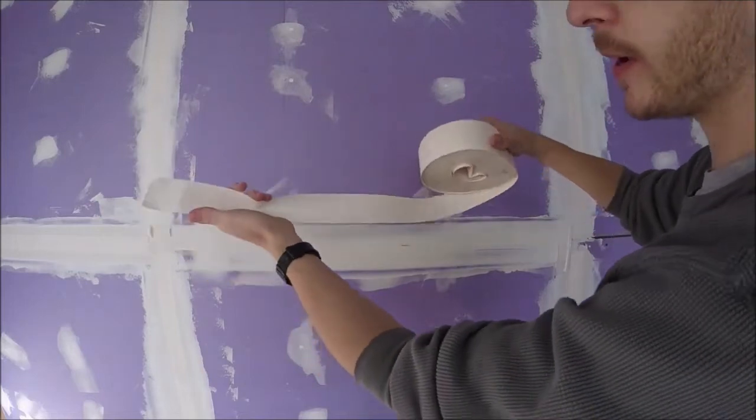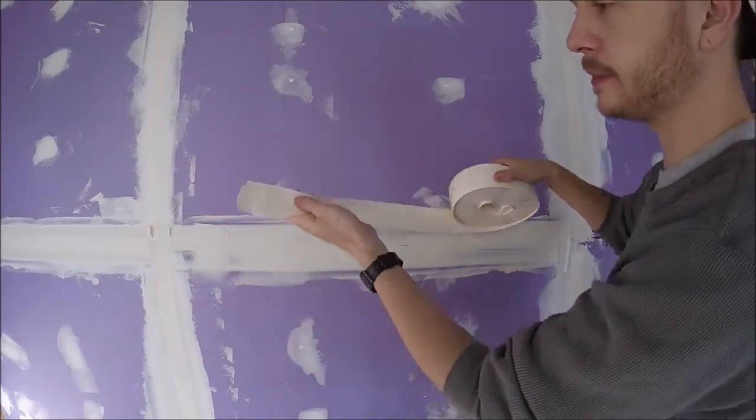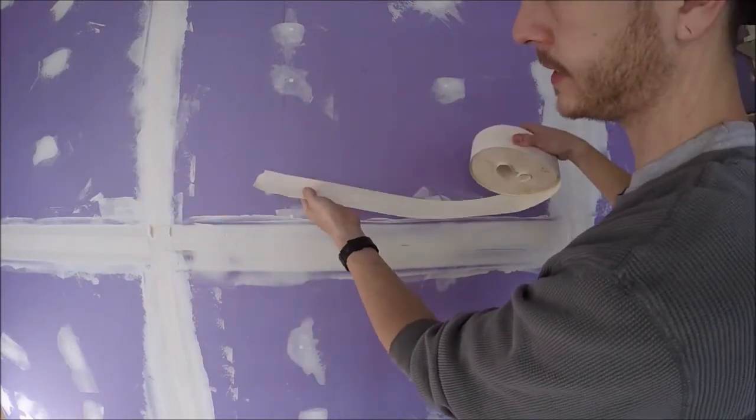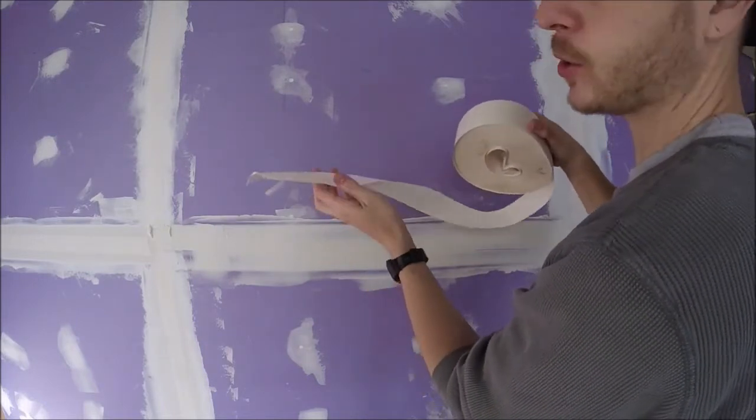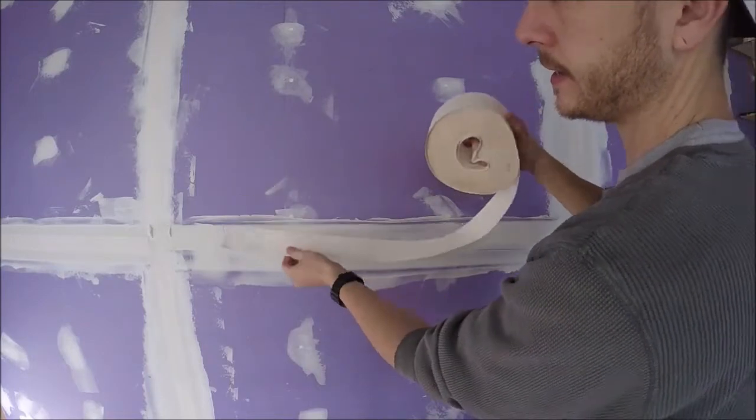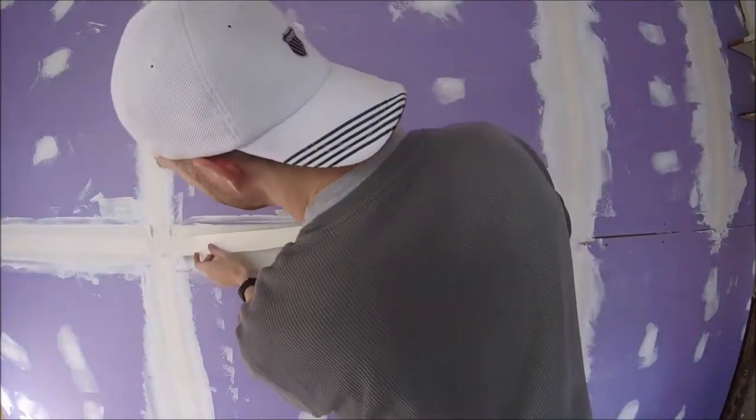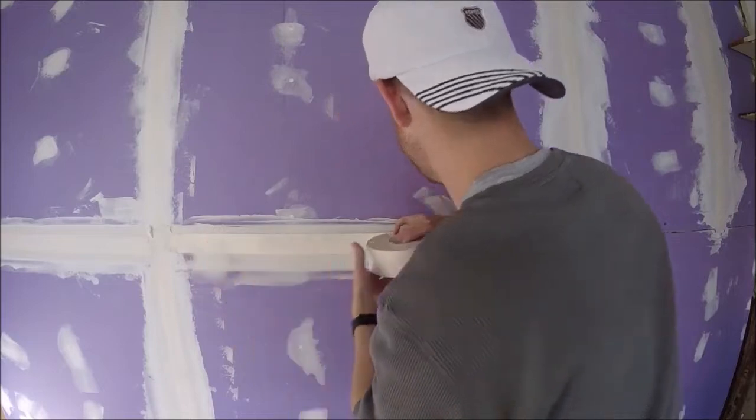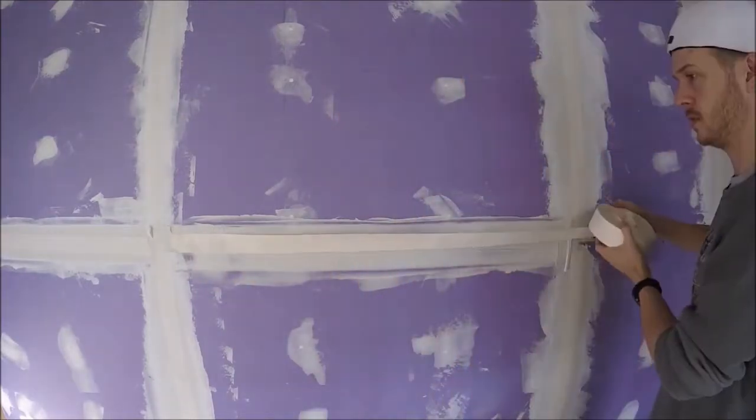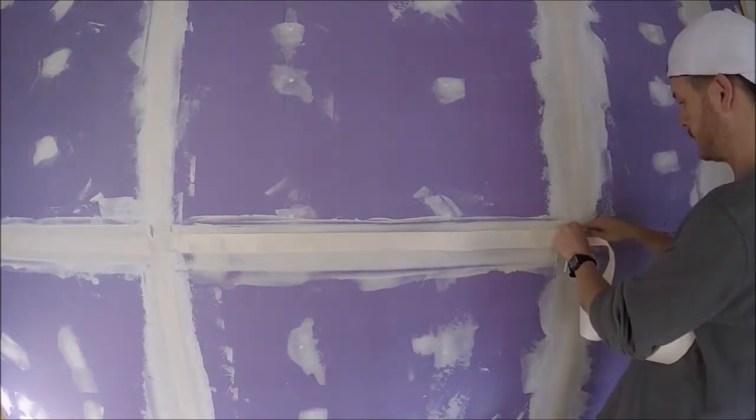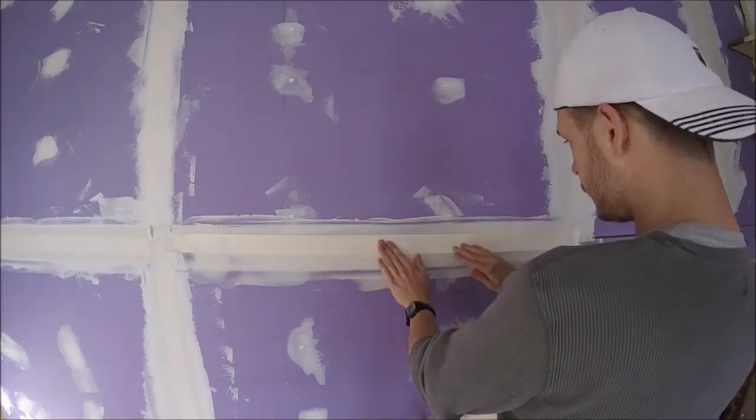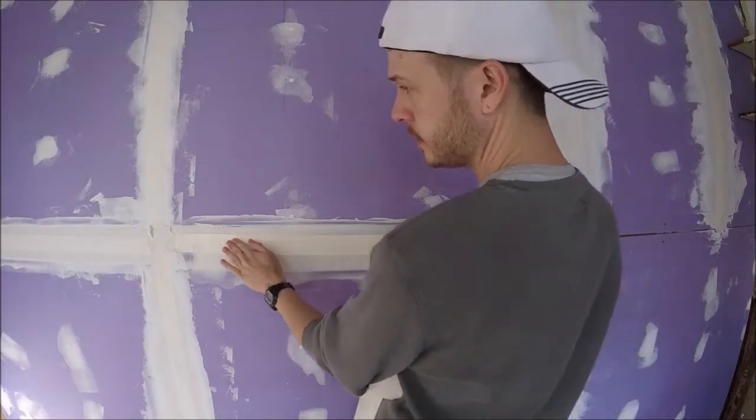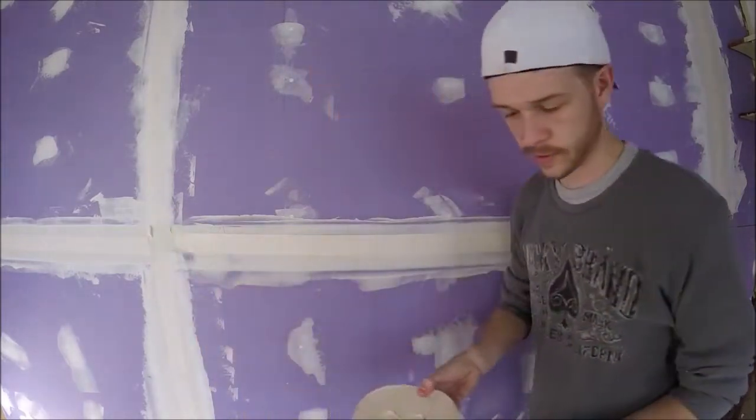Alright, so now we're going to take our regular old drywall paper tape. It's already pre-creased and we're going to start laying it across with the crease in. We're just going to start it over, roll it across, rip it, and lay it in there. You can just tack it in place, it's fine.